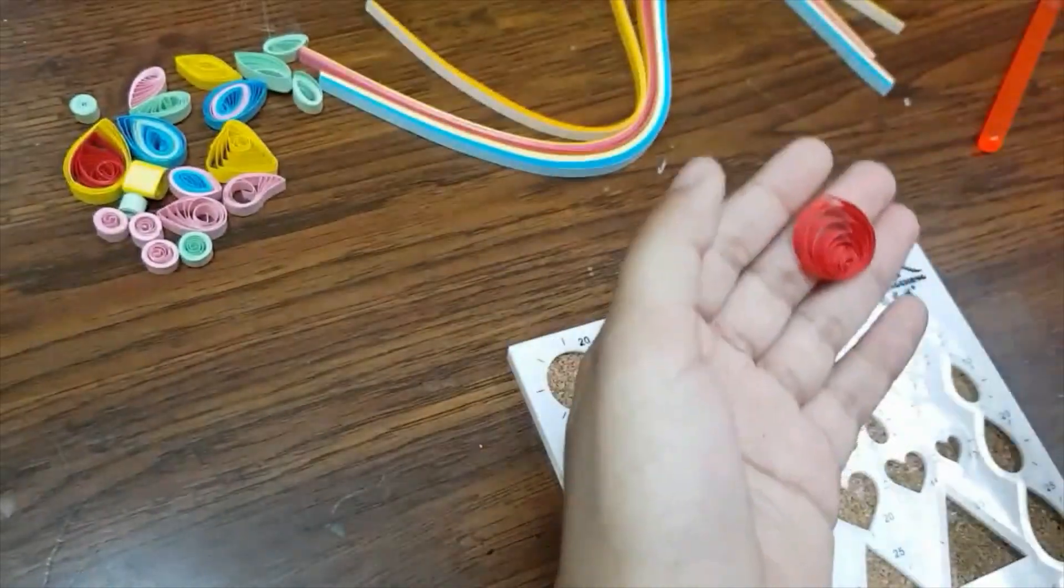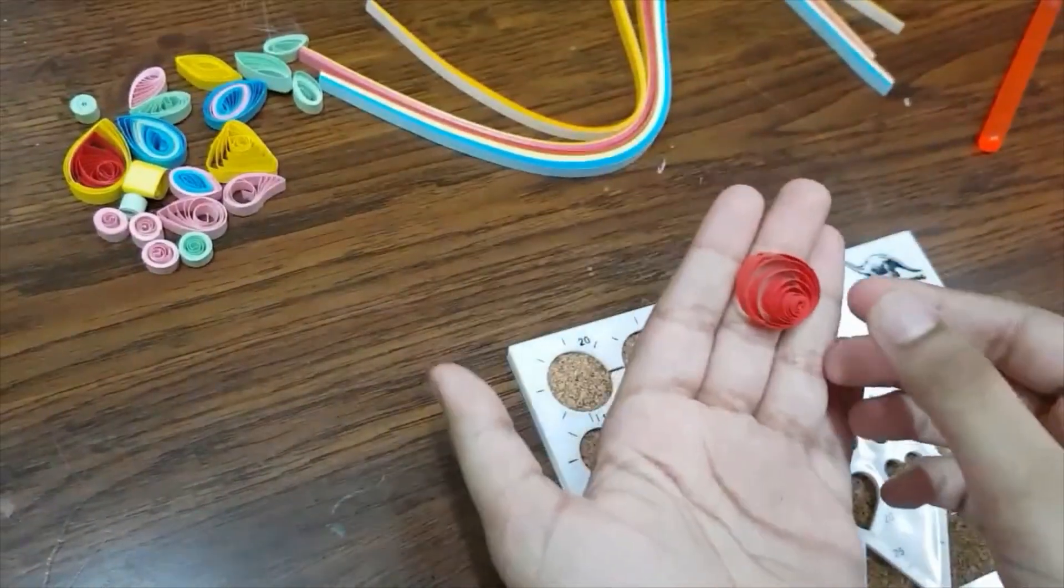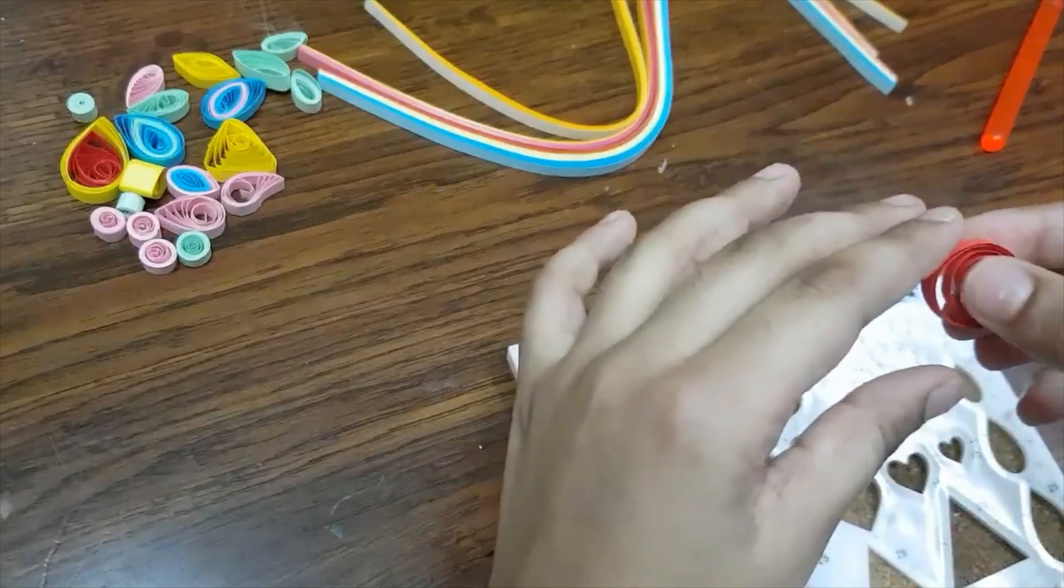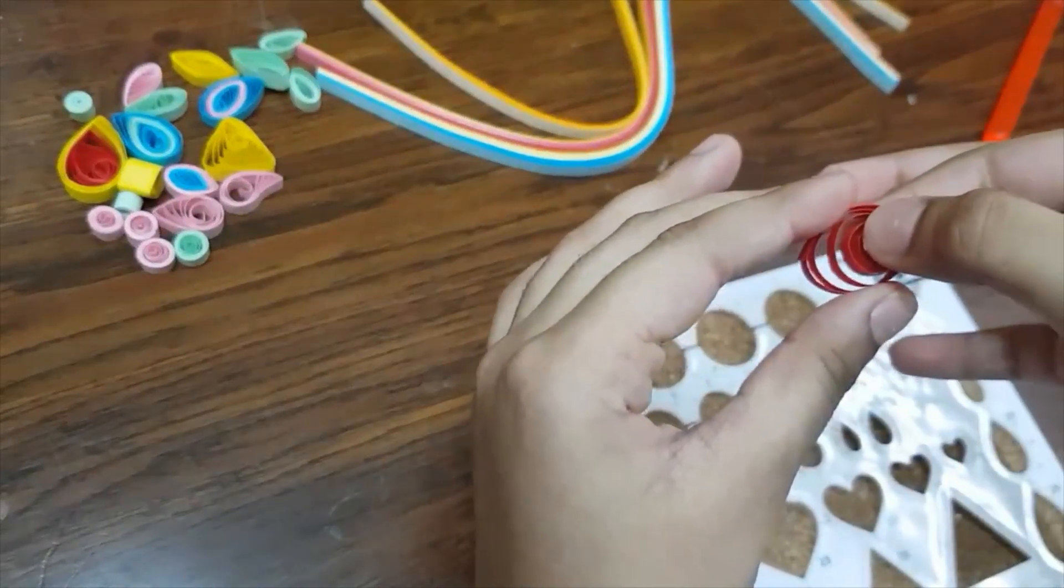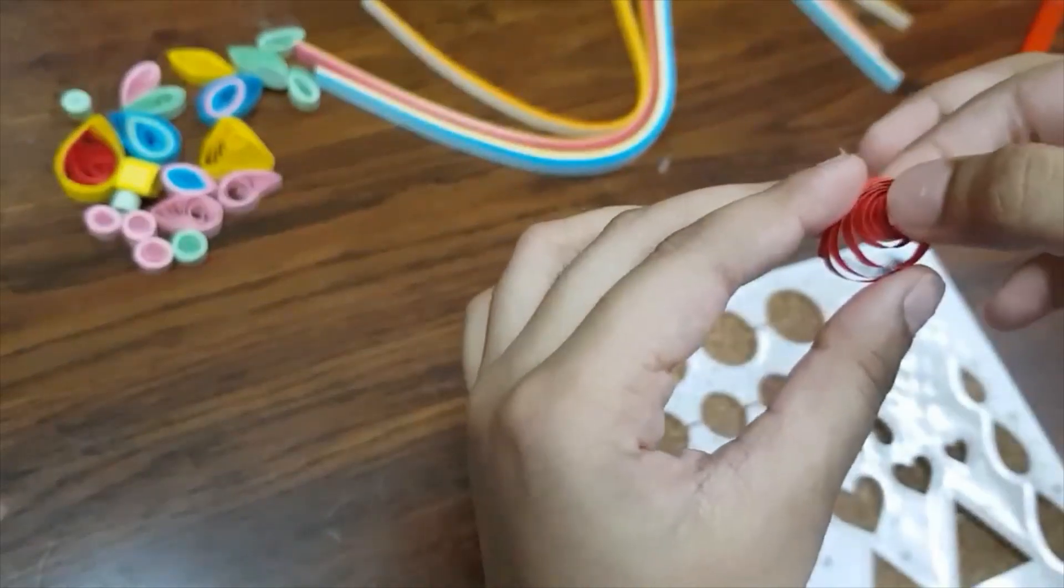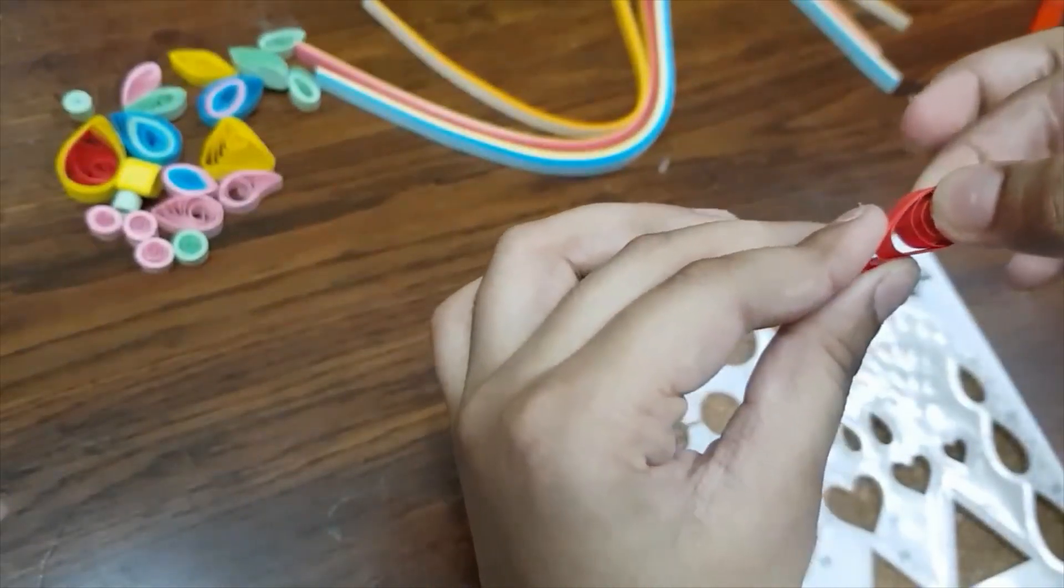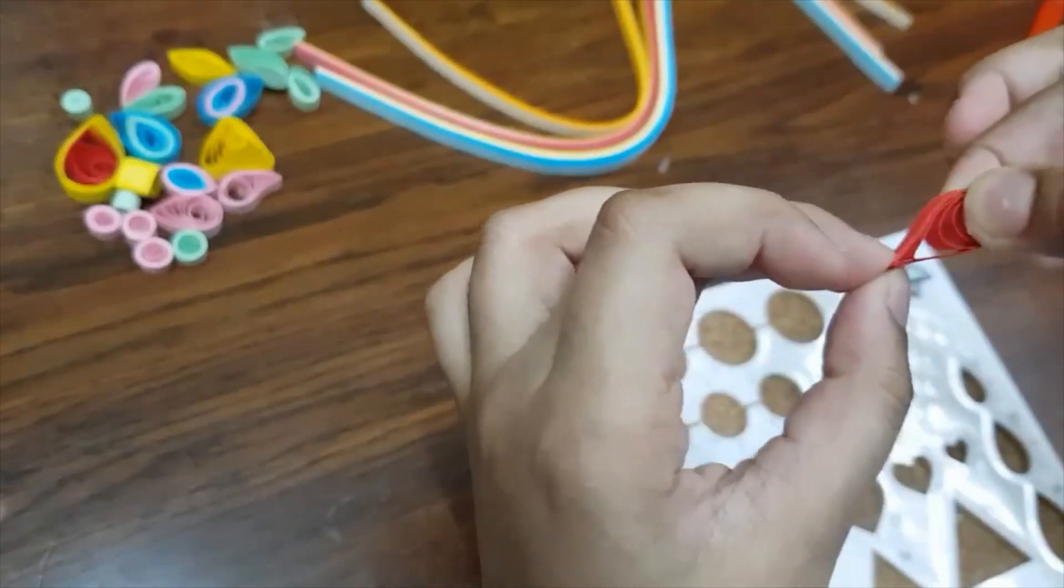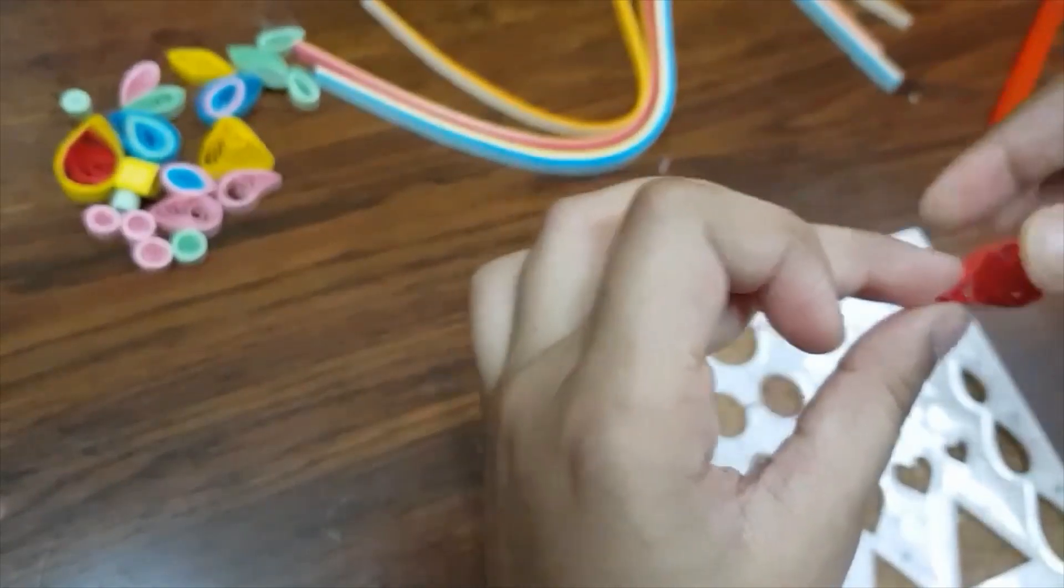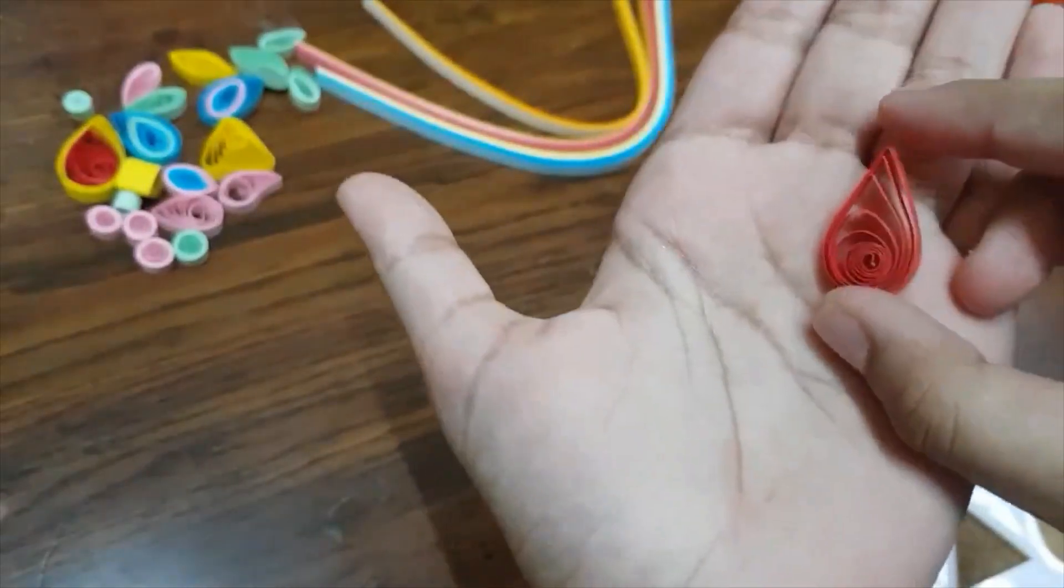So right now you can see we got a small spiral kind of thing. Now what we have to do is we have to make a shape. So we're going to be making a teardrop. What you have to do is basically hold it on this part where the more swirly part is, hold it back and press it on this part.